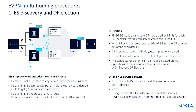For ES discovery and DF election — how does this work? An ESI is provisioned and advertised in an ES route. The ES route is not associated to a service, but to the base instance. For the DF election, there is a DF candidate list built of the PE IPs for each EVI identifier — that is, each service contained in the Ethernet segment. The DF election can be non-revertive if the DF algorithm is preference-based. The candidate list per EVI can be modified based on the operational status of the access interface or pseudowire — that's attachment circuit influence on DF election.